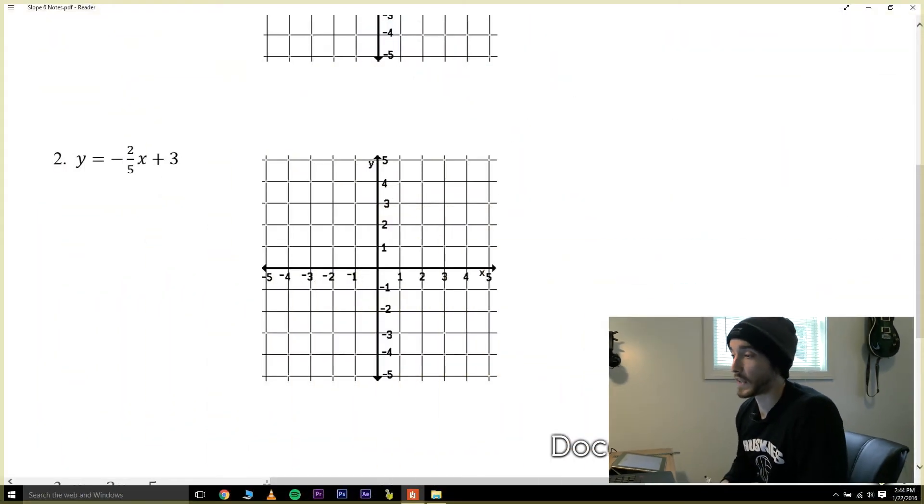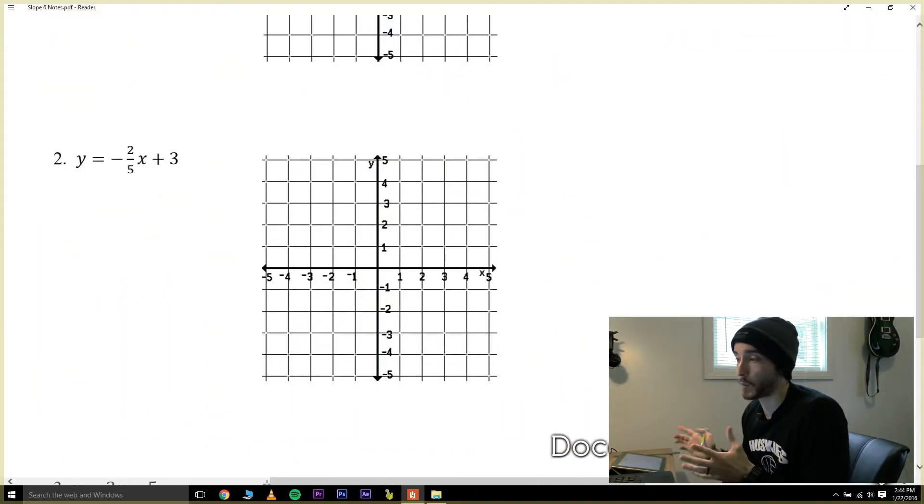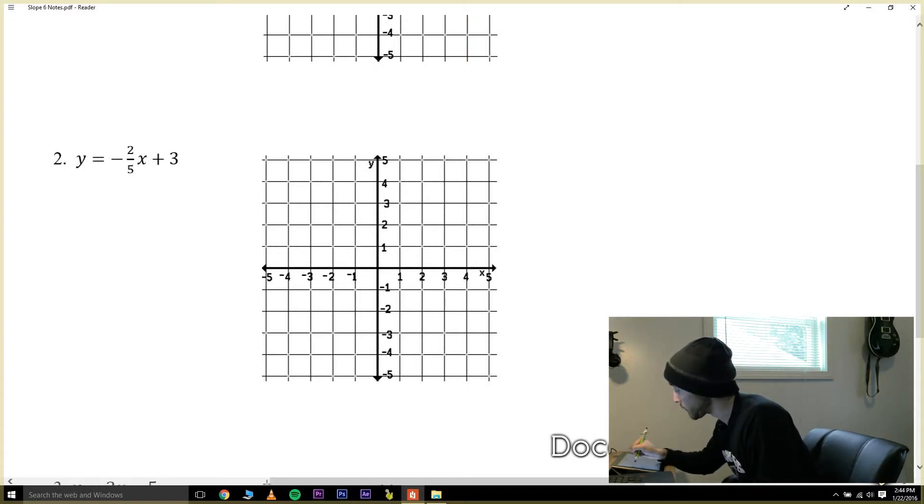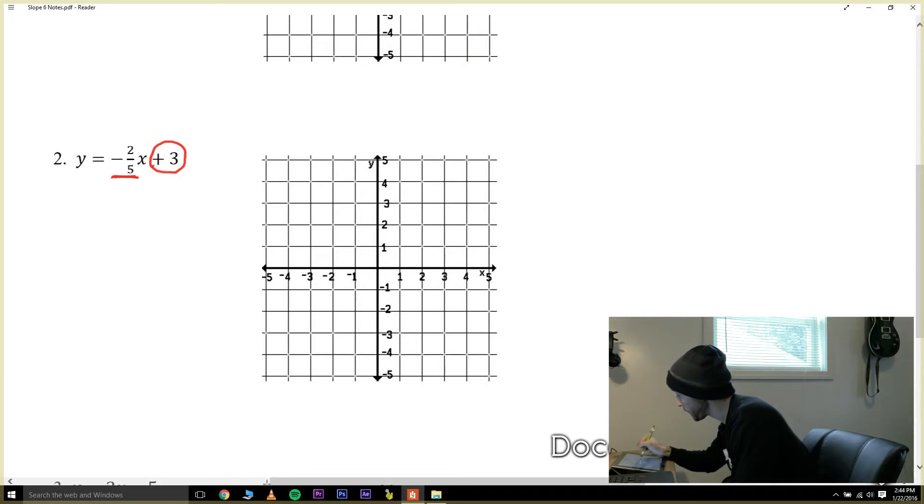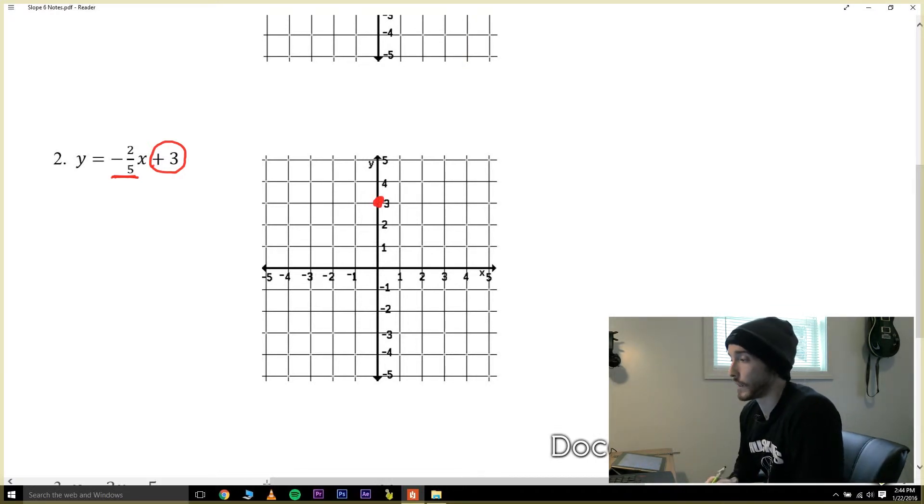Let's apply what we just learned to number two. The equation says y equals negative two-fifths x plus three and we want to graph this line. Let's underline the slope which is negative two-fifths and then circle the y-intercept. Notice I'm also circling the plus sign. That's where you begin at plus three and it's always on the y-axis. So let's go and make our first dot plus three on the y-axis since we know that's where the line begins.